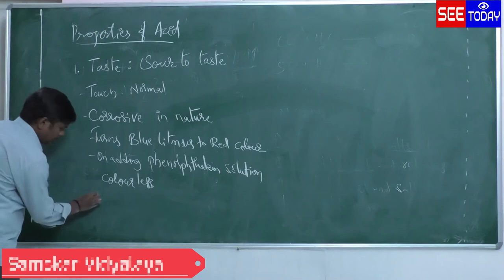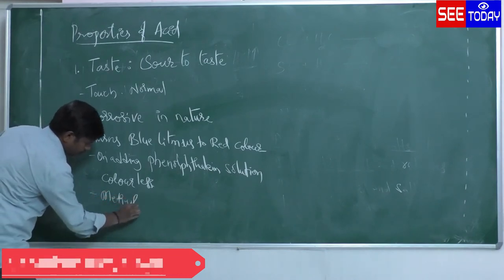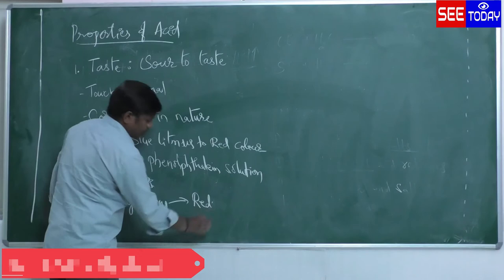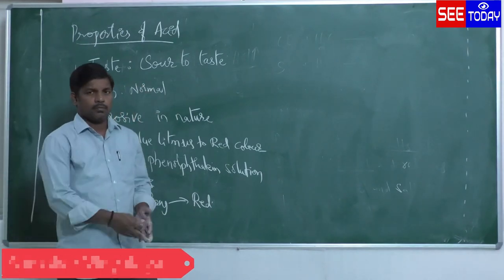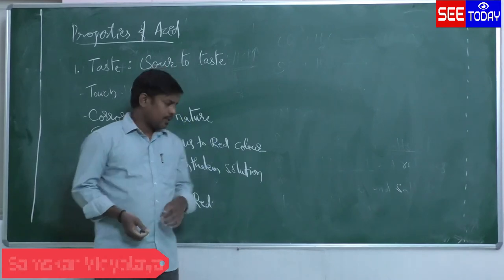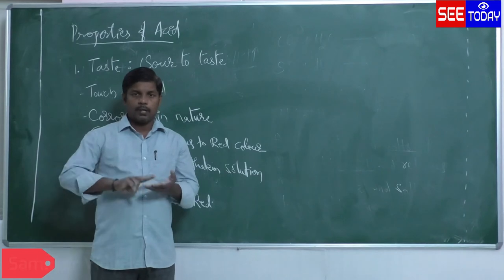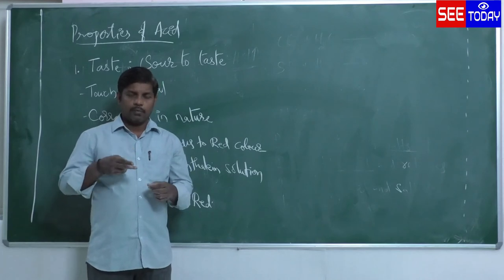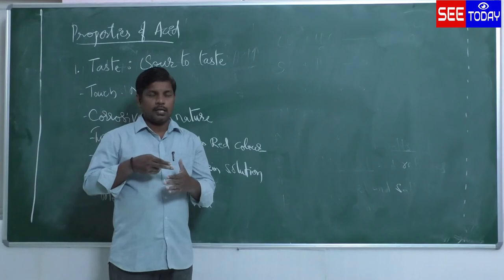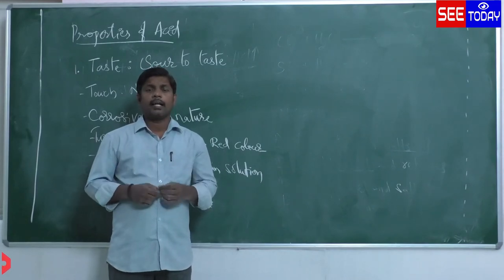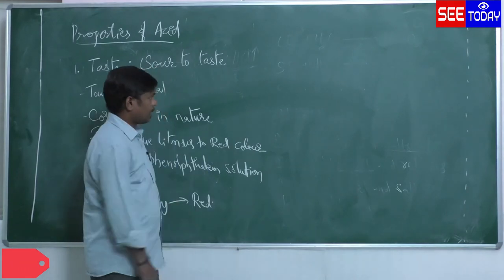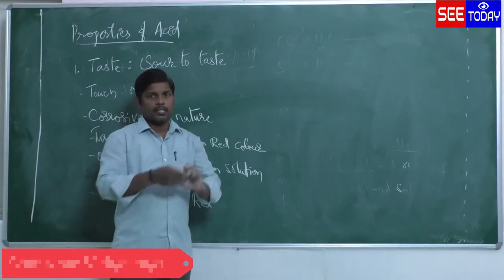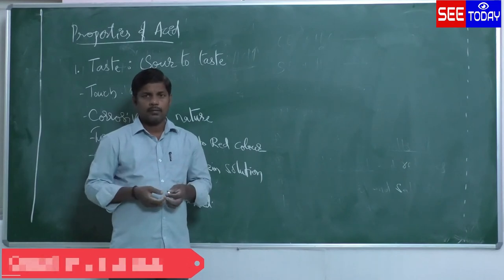Next, acids on reaction with methyl orange turn it to red colour. There is an experiment for this — they apply methyl orange to a knife and whenever they cut a lemon with that methyl orange coated knife, automatically we see a red colour and they claim it looks like blood. This is because lemon contains citric acid, and methyl orange on reacting with that citric acid turns red like blood.